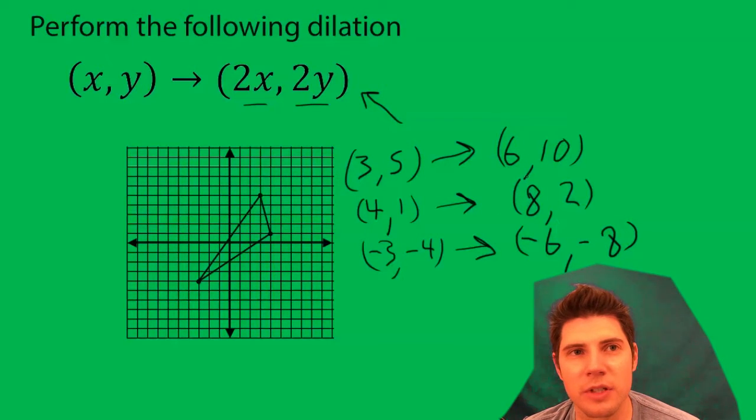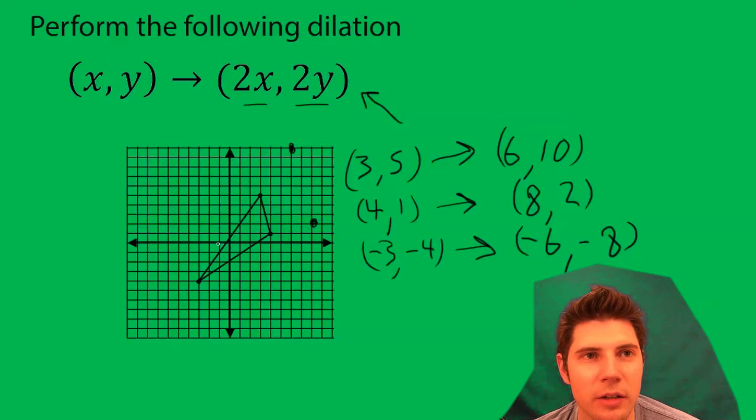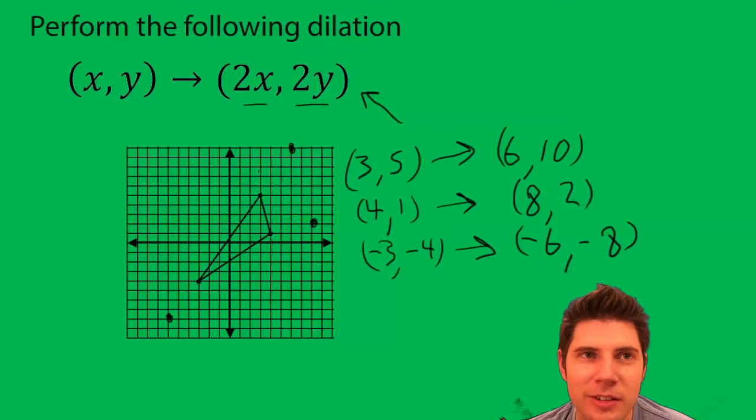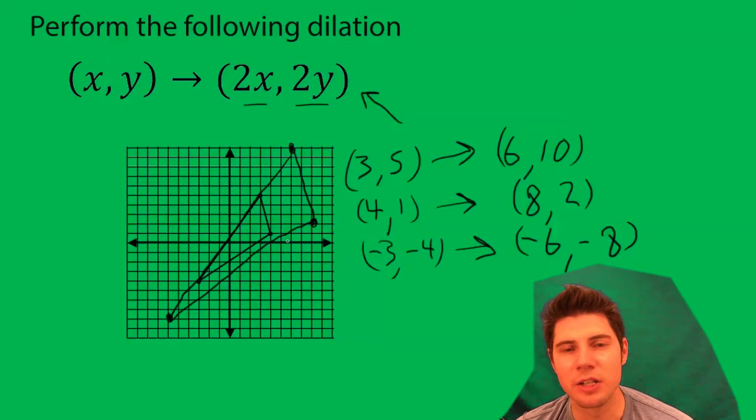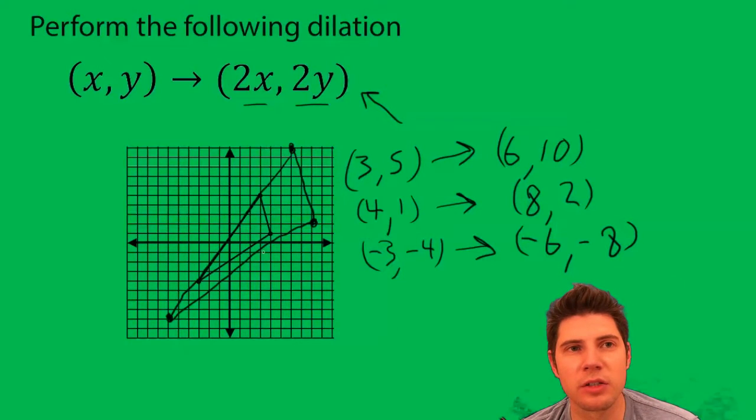So we can plot them: 6, 10; 8, 2; and negative 6, negative 8. So now connect the dots. Then we end up with a triangle that each side is twice as large as the original, and each point is twice the distance from the origin that it was before.